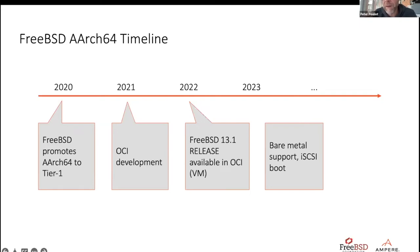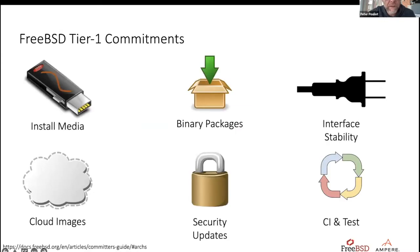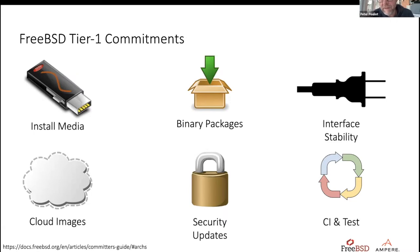Tier one status covers install media, binary packages, interface stability, curated up-to-date cloud images in native cloud provider marketplaces, security updates, and a CI and test curation process behind all of that.